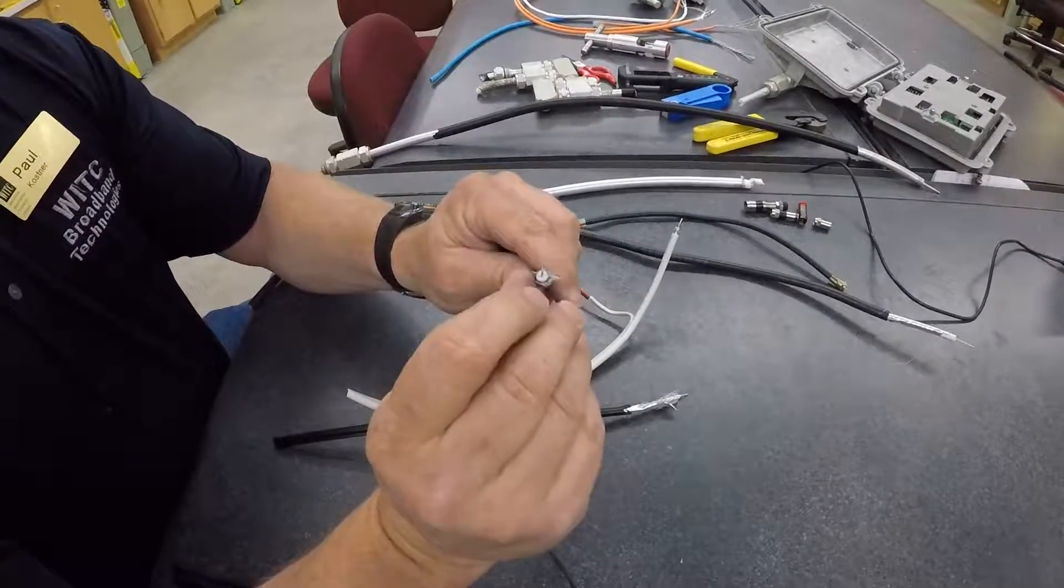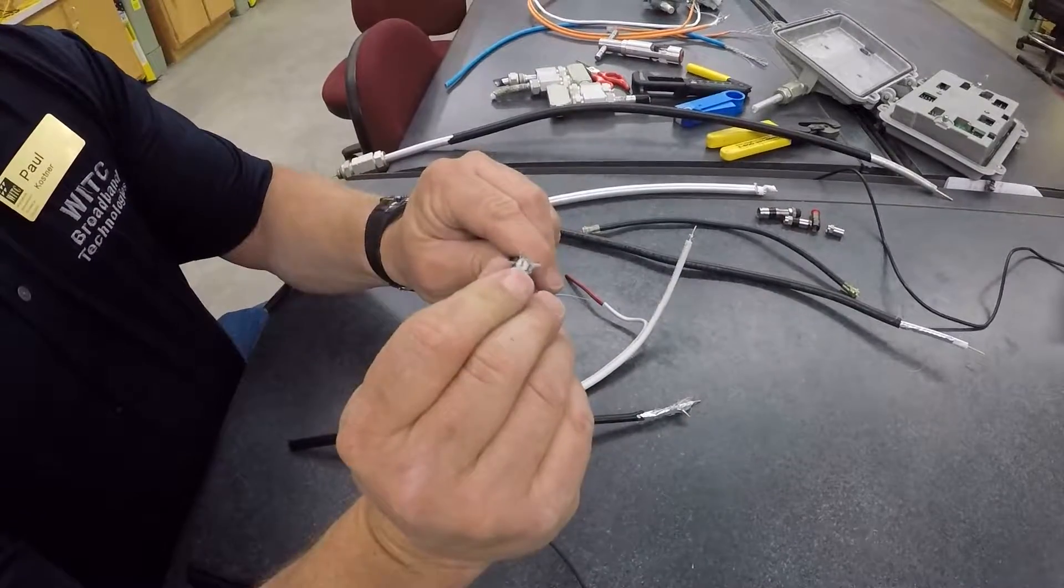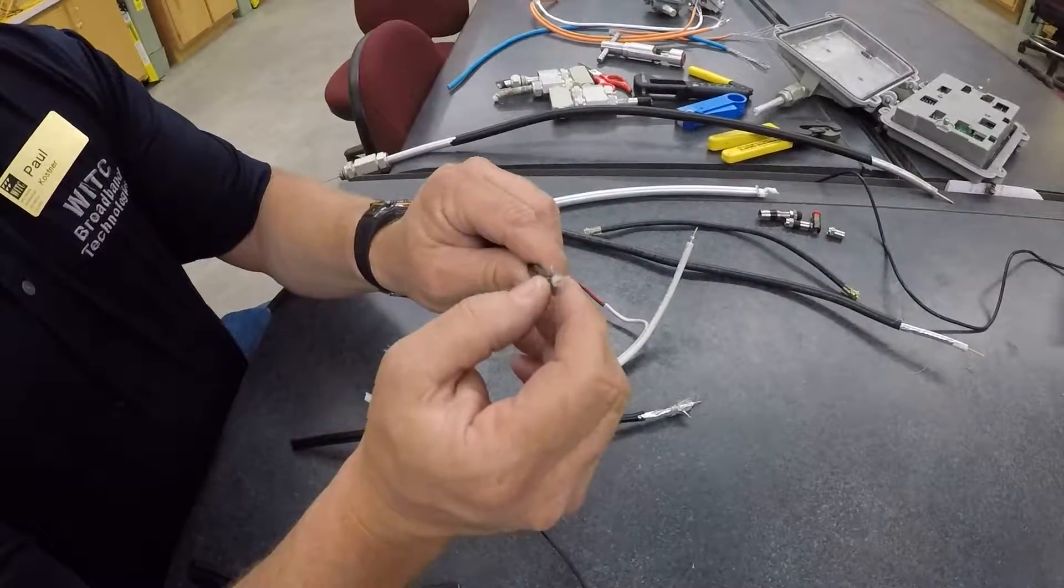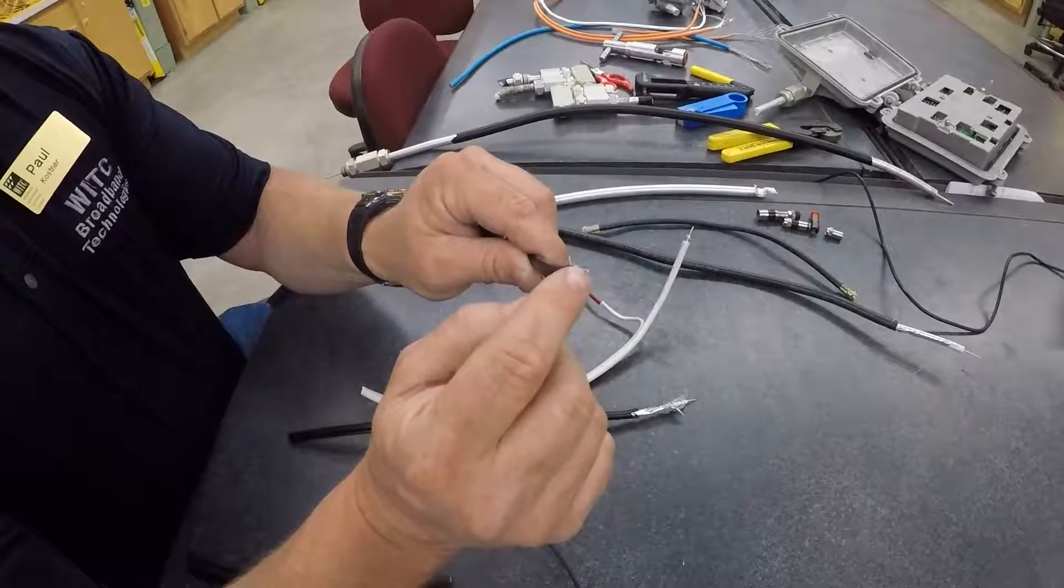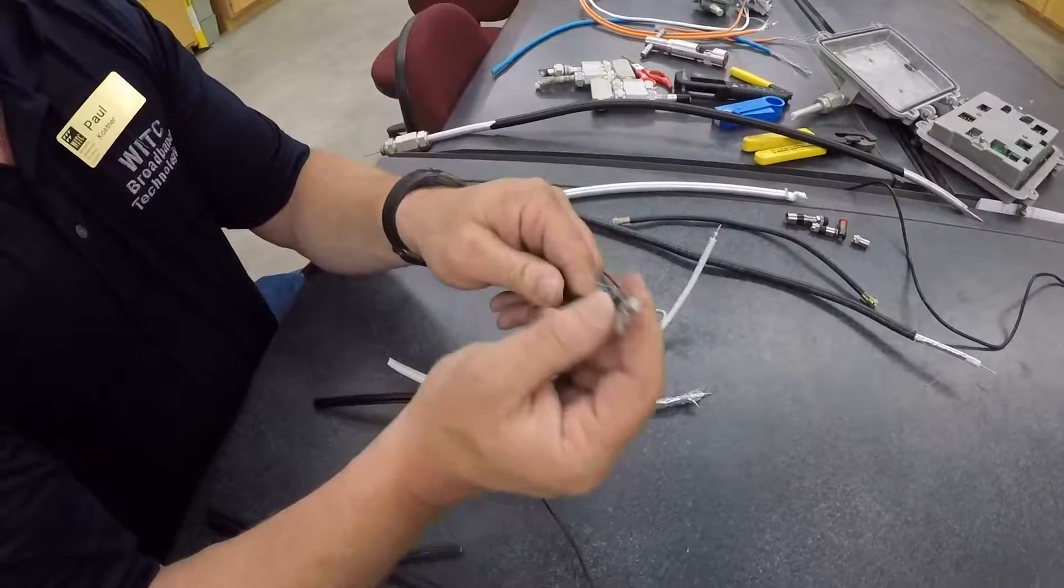And then inside here is called, the white part is your dielectric. Your dielectric is the insulation between your center conductor, this copper center conductor, and your outer metallic sheath.